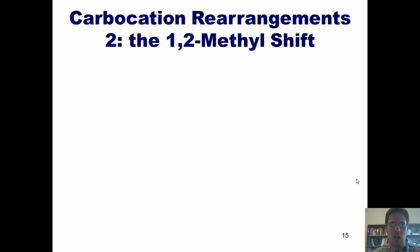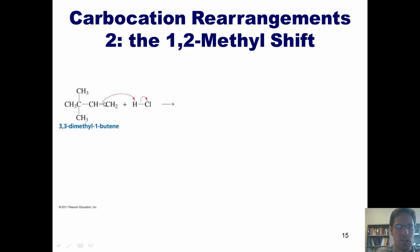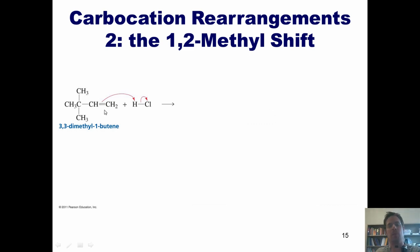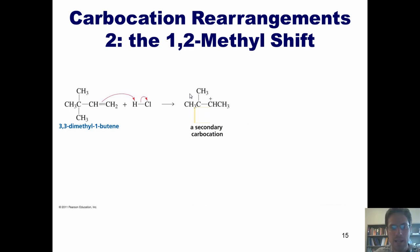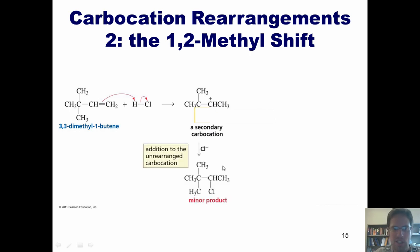There's another type of carbocation rearrangement: the 1,2-methyl shift, very similar. If we have an alkene like this with HCl, the electrons come out and attack a hydrogen, thrusting those electrons up onto the chlorine, releasing free chloride. The hydrogen attaches to the carbon on the right because it is the one bonded to more hydrogens, giving the more stable secondary carbocation intermediate. We can imagine the chloride coming in and plugging this hole to give a product, but it's a minor product.